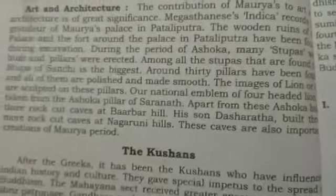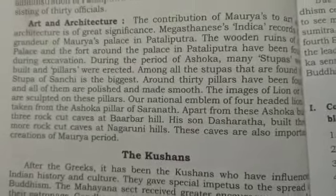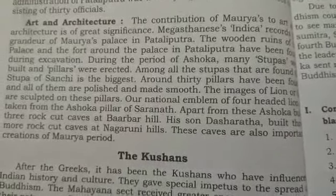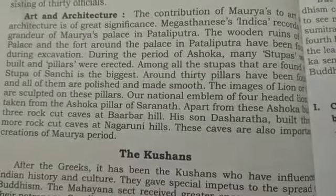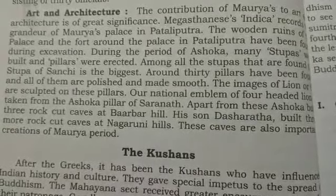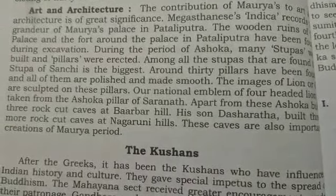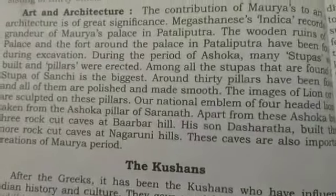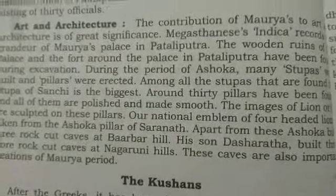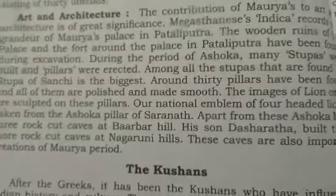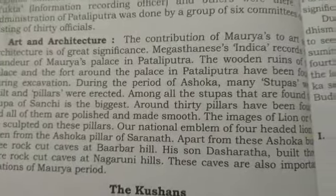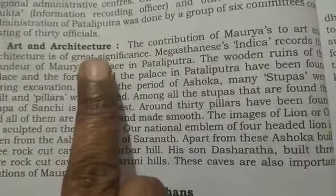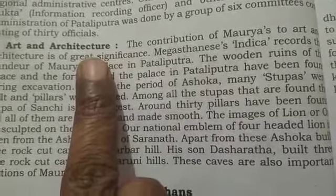Welcome back to Social Science session. In the previous classes we were talking about the Mauryas — we discussed Chandragupta Maurya and also the great Ashoka. After Ashoka, we covered the Kalinga War, how he embraced Buddhism, and so on. Today's class we are going to speak about the art and architecture of the Maurya period.